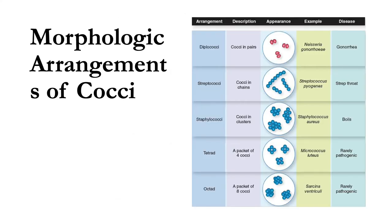Here are the morphologic arrangements of cocci and their sample diseases. Cocci in pairs are diplococci — one example is Neisseria gonorrhoeae, which causes gonorrhea. Cocci in chains are streptococci — Streptococcus pyogenes causes strep throat. Cocci in clusters are staphylococci — Staphylococcus aureus causes boils. A packet of four cocci is called a tetrad — one example is Micrococcus luteus, which is rarely pathogenic. A packet of eight cocci is called an octad — example is Sarcina ventriculi, a rare cause of disease.